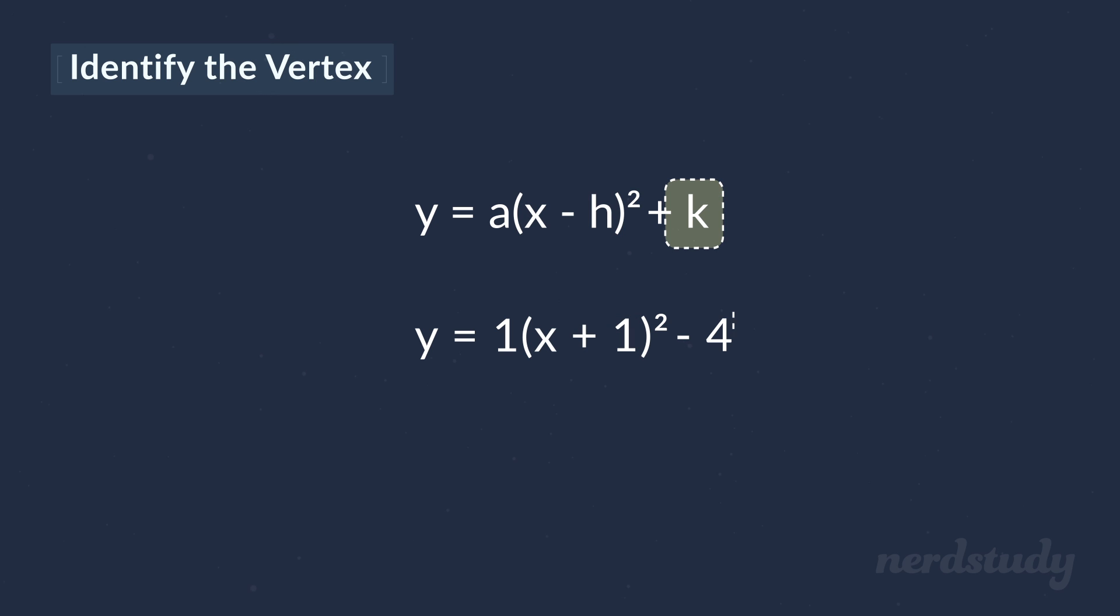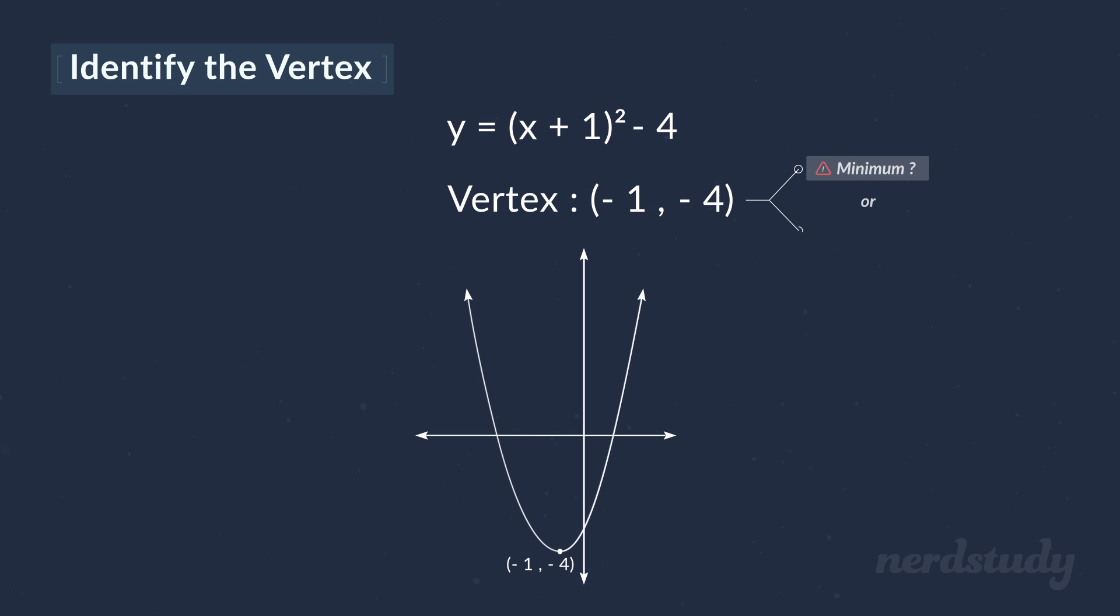And our k is equal to negative 4. Thus, our vertex would be negative 1, negative 4. Oh, and by the way, would this vertex be a minimum or a maximum?